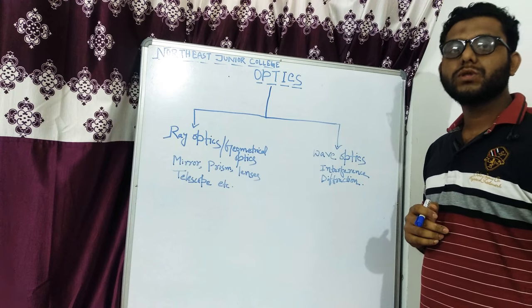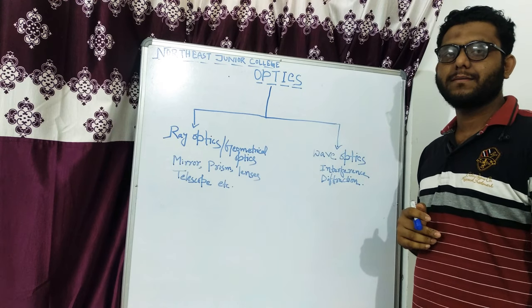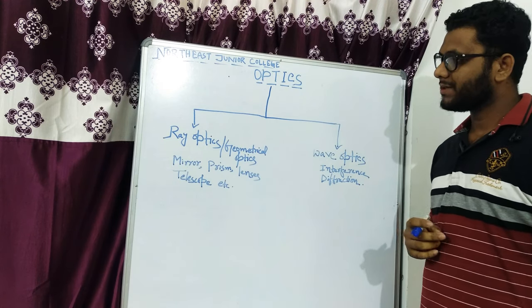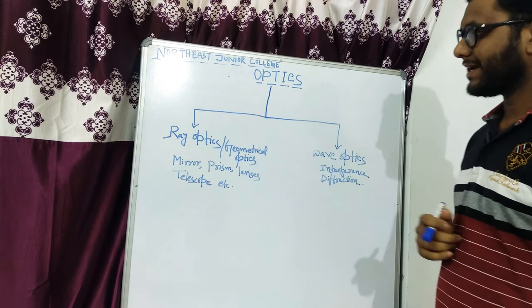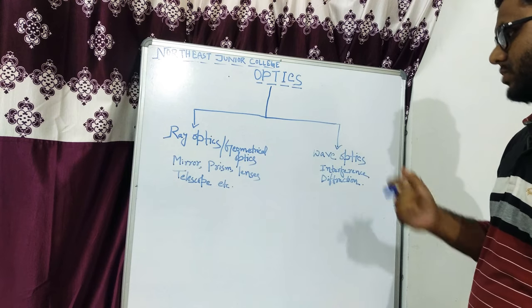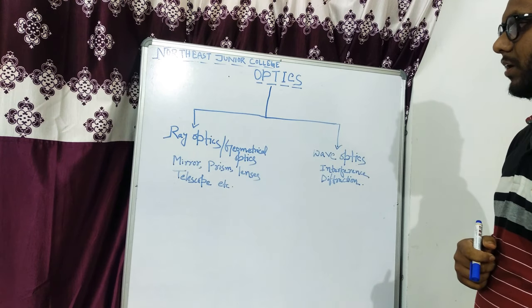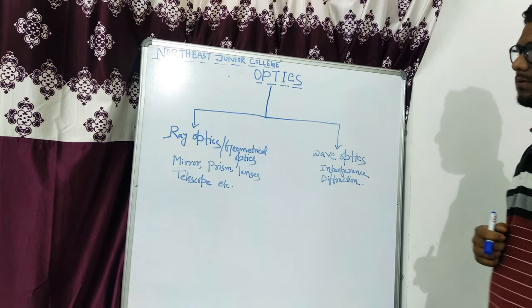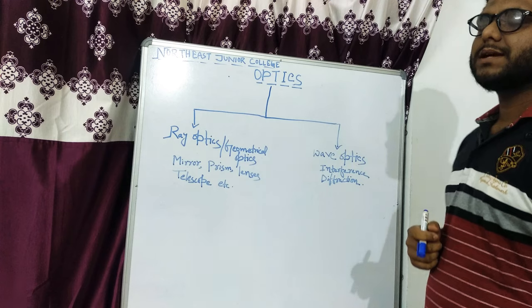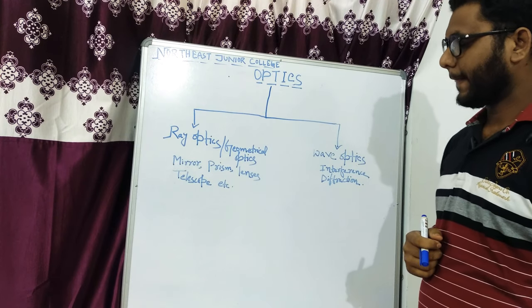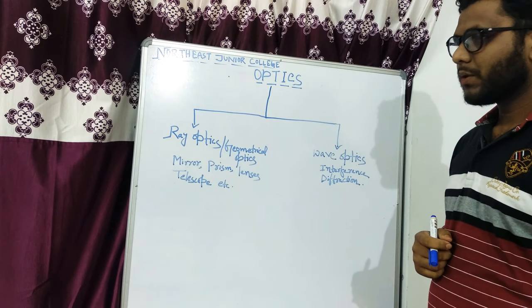Newton's medium lines — he proposed the corpuscular theory of light, along with other molecular and computing theories.